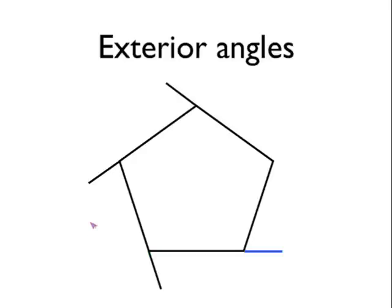And it's really important that you keep going in the same direction around the polygon. Once you've got it to this stage, you then just draw in all of the angles, as you can see here. And all of the blue angles in this diagram are the exterior angles of this regular pentagon.